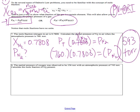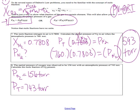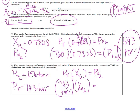The partial pressure of oxygen was observed to be 156 torr, with an atmospheric pressure — that's P_total — of 743 torr. Calculate the mole fraction of O₂ present. You can do part over whole, and that'll give you the fraction, or plug it into the same equation: P_total times the mole fraction of O₂ equals the partial pressure of O₂. Our total is 743 torr and our partial pressure is 156 torr.